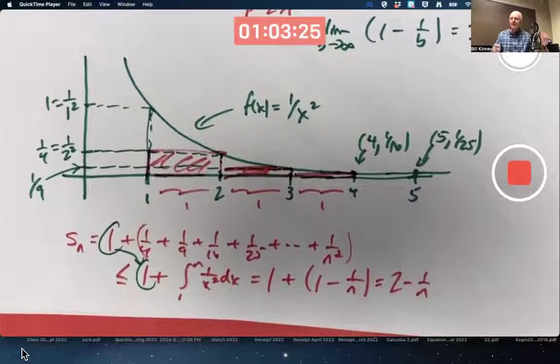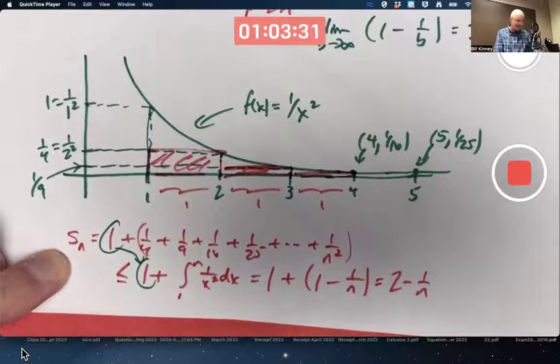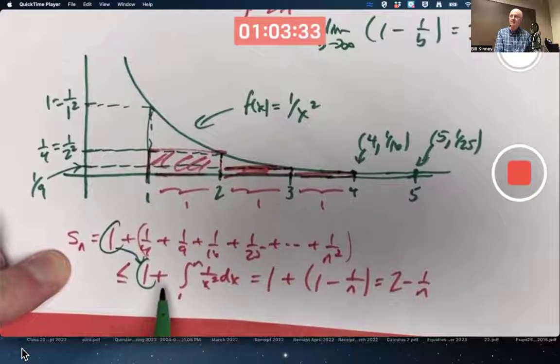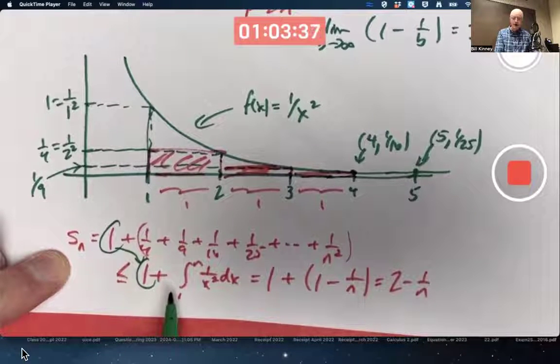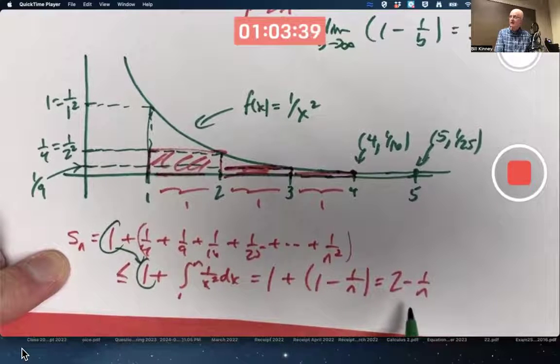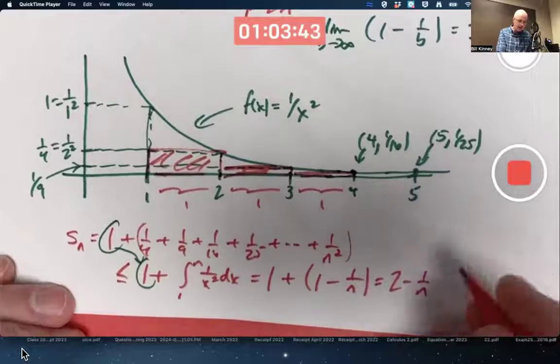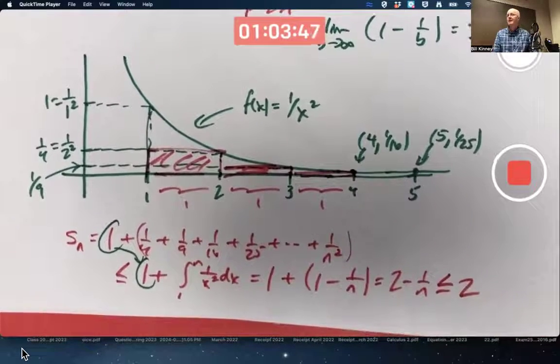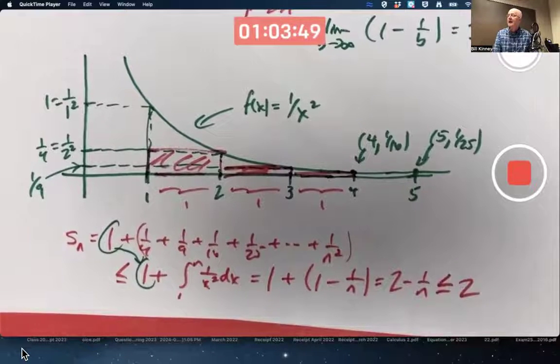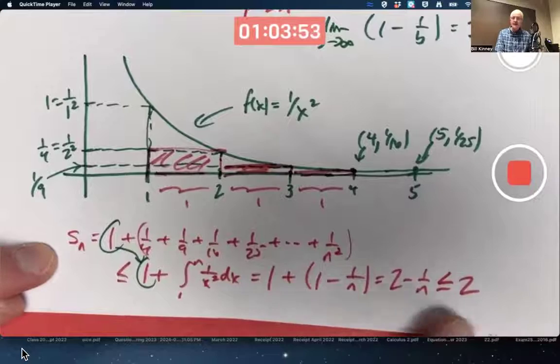So what does this mean? Listen very carefully. For each value of n, Sn, the nth partial sum of this Basel problem, sum of reciprocals or perfect squares, is always less than or equal to 2 minus 1 over n, which itself is always less than or equal to 2 for all positive integers n.